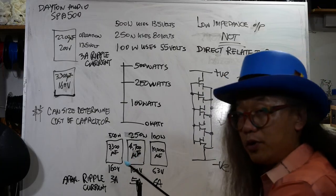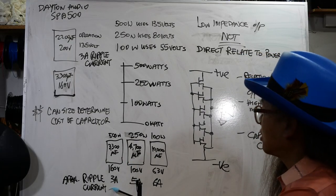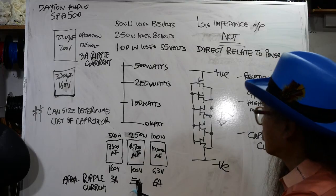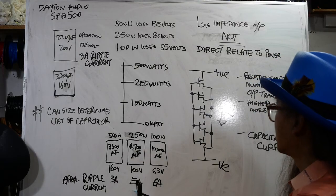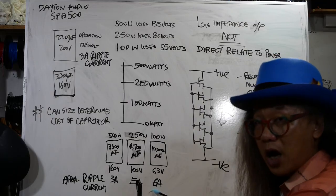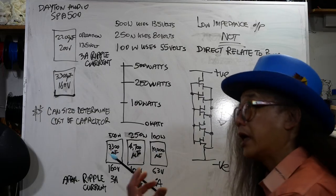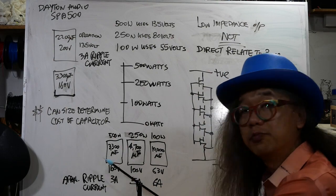But the ripple current - maximum ripple current rating at 3300 microfarad is 3 amps, 4700 microfarad is 5 amps, and 10,000 microfarad is 6 amps. Some of them can be up to 7 amps, but to be fair,